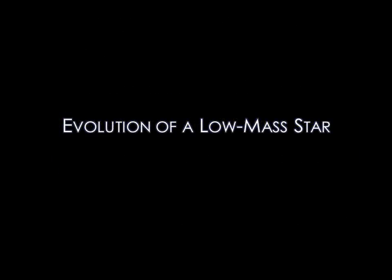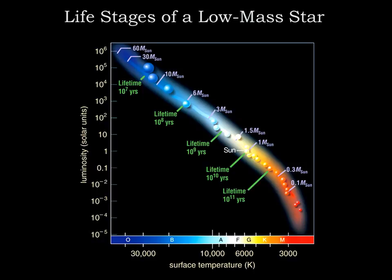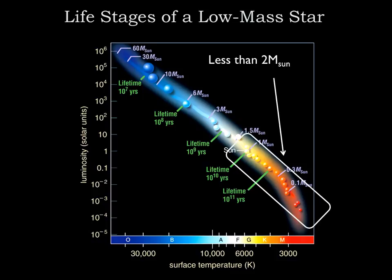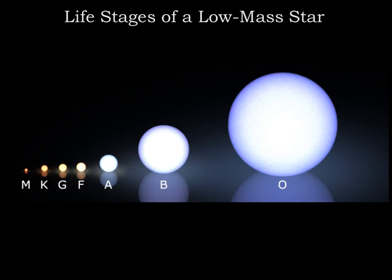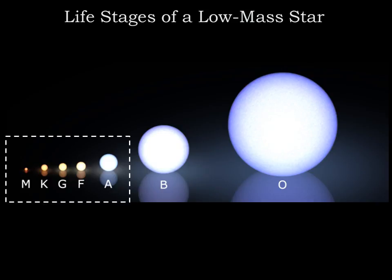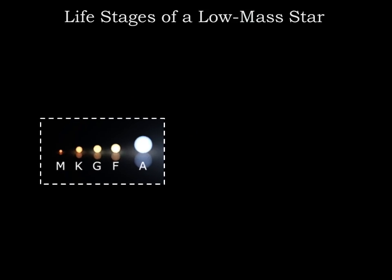We'll begin our journey through stellar evolution with the life of a low mass star. This mass category includes our sun, so you're about to learn the ultimate fate of our parent star. Low mass stars are stars born with less than two solar masses of material, in spectral types M to A.